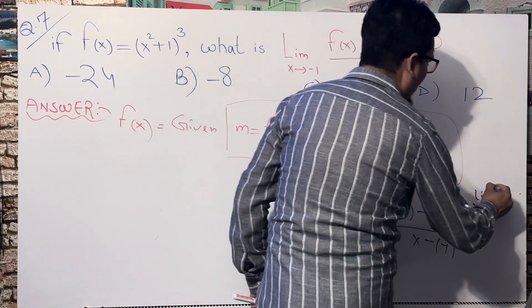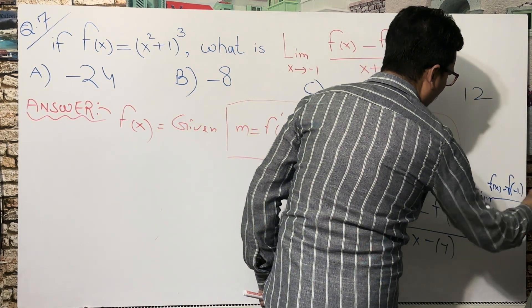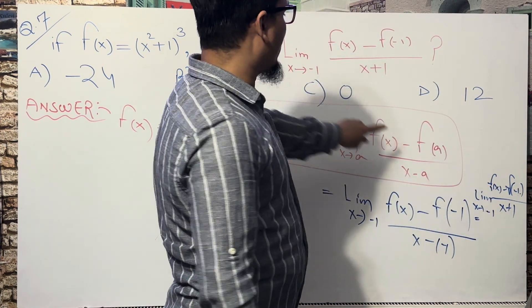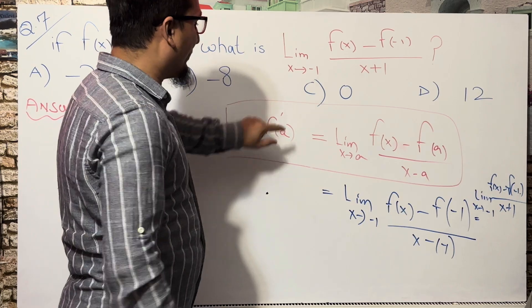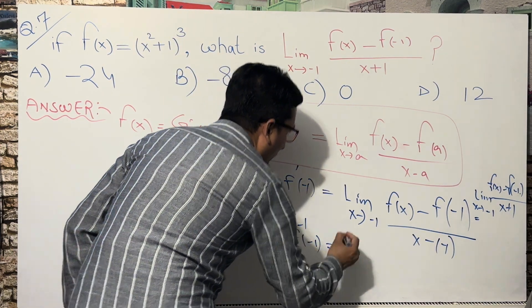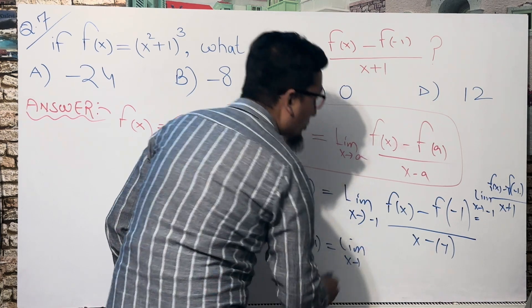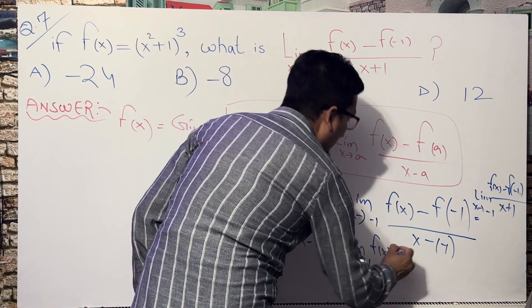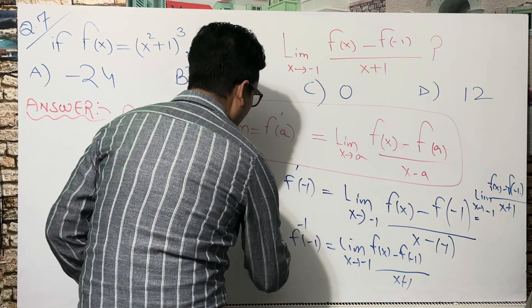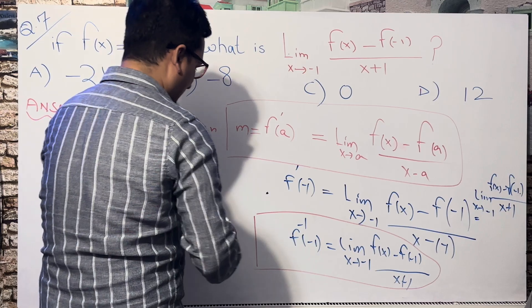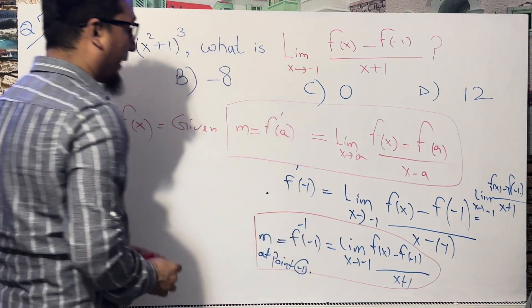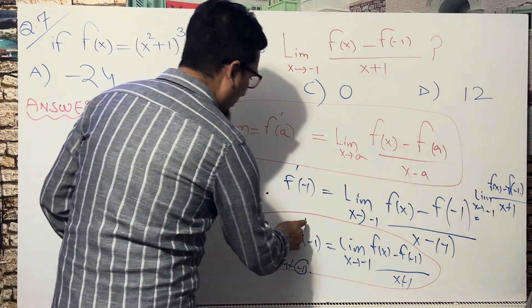You can see the given expression matches exactly: [f(x) − f(−1)] / (x + 1) with limit x→−1. This means it equals f′(a) where a = −1, so it equals f′(−1). In other words, this limit represents the slope of the function at the point x = −1.